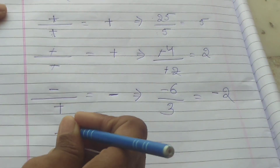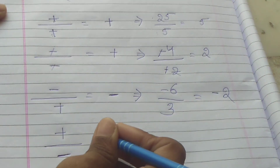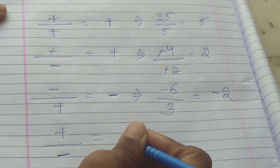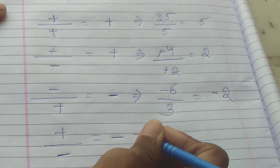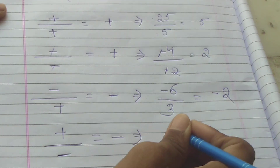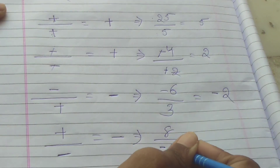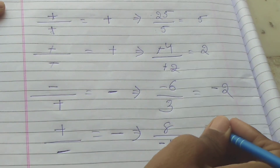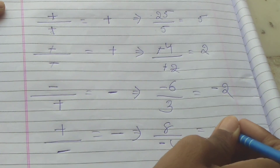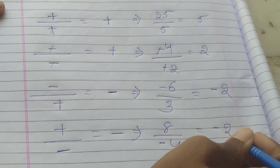Last rule: plus divided by minus. Plus divided by minus gives minus. For example, 8 divided by minus 4: the answer is minus 2.